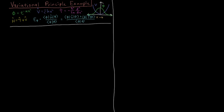We're going to examine how the variational principle works in practice with an example. I picked the harmonic oscillator, which has a potential energy of ½kx². The trial function I chose is a Gaussian function, e to the minus alpha x squared. We know that the ground state of the harmonic oscillator is actually a Gaussian function, so the variational principle — finding the minimum energy with respect to the parameter alpha — should give us the correct ground state wave function and correct ground state energy.